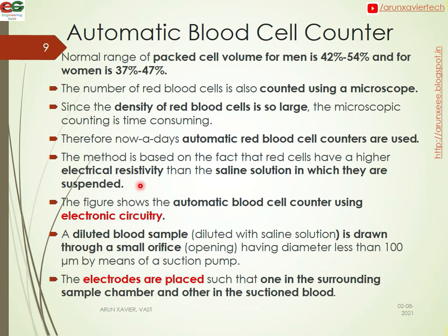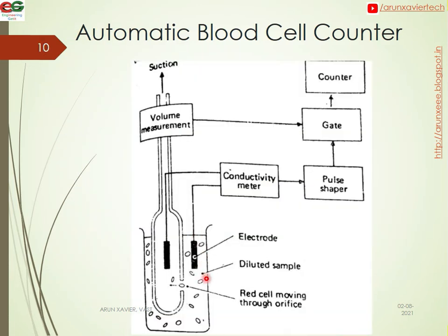The figure shows the automatic red blood cell counting system using an electronic circuit. The diluted blood sample is drawn through a small orifice into a counting channel. We are using two electrodes here to measure conductivity. The resistivity changes as red blood cells pass through, allowing us to count them automatically.